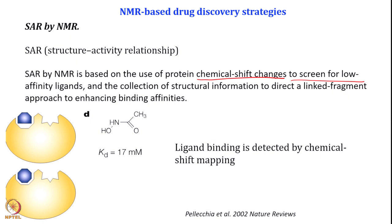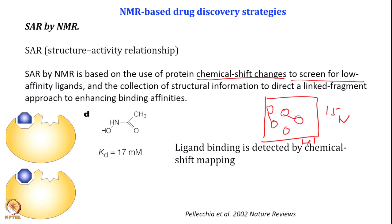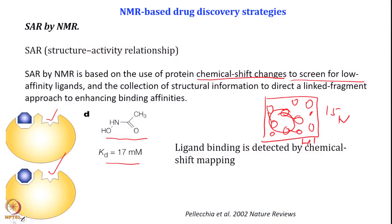We isotopically label the protein, and say there is a binding site where we start with a binder. We see some of the shifts happening — this peak shifted here, this peak shifted here, these peaks shifted, and other peaks did not shift. Now we know these are the binding epitopes on the protein. Even low-affinity binders, like a molecule binding with a KD of 17 millimolar, can be identified. If there is another binding site, we do the same experiment with another set of compounds, and then we attach both binders to find a better molecule.